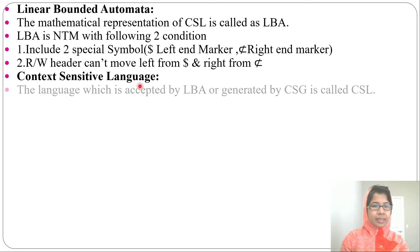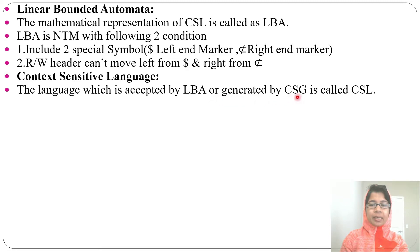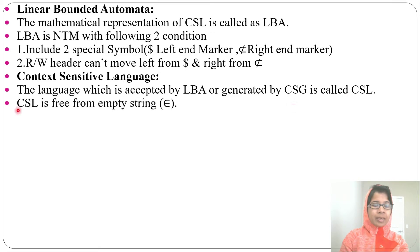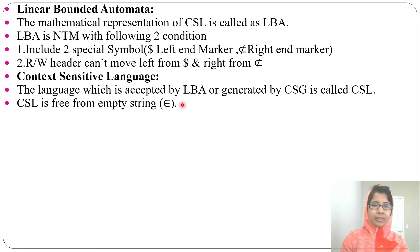Let's discuss context-sensitive language. The language which is accepted by Linear Bounded Automata or generated by context-sensitive grammar is called a context-sensitive language. Context-sensitive language is free from the empty string (epsilon). That is, Linear Bounded Automata cannot accept epsilon. Any string that contains epsilon or where n is greater than or equal to 0 will not be accepted by Linear Bounded Automata.